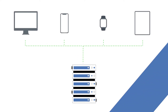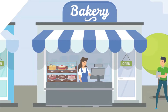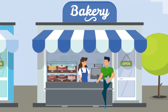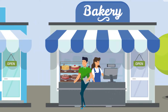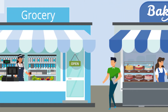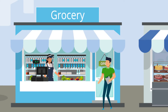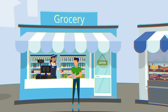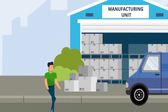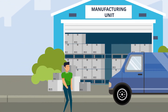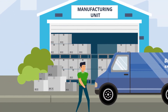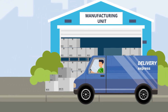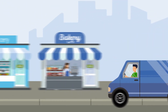But how exactly does it work? Consider the role of an order booker. He goes to the market, accepts orders from shopkeepers, gets back to the manufacturer, and then delivers the products.